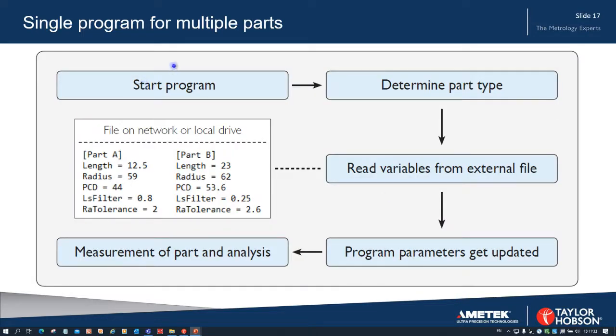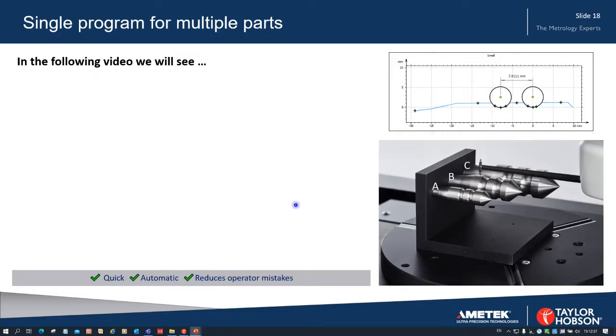The way it works then, the whole process that we've just been talking about: we start the program and we determine the part type either by barcode or by sampling the surface or by telling the system which part we're measuring. In each case it will read the variables about that part from a database or from a file held locally on the network. Note that the information about the part doesn't just include the length or dimensions of the part, but it also includes other things to do with the analysis. So we could choose how we want to analyze that part. In this case we're using a short LS filter, short wavelength filter of 0.8 millimeters, but for Part B here we're using a filter of 0.25 millimeters. So all of that can be kept in the company database and called up just by the barcode or the other methods before we start the measurement. So let's have a look at the way we can automatically detect which parts are there.